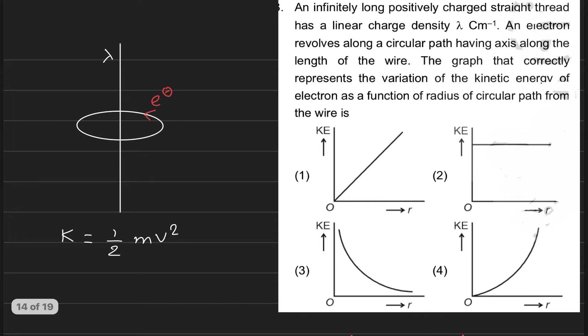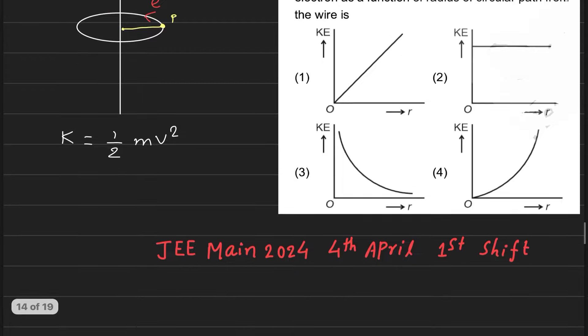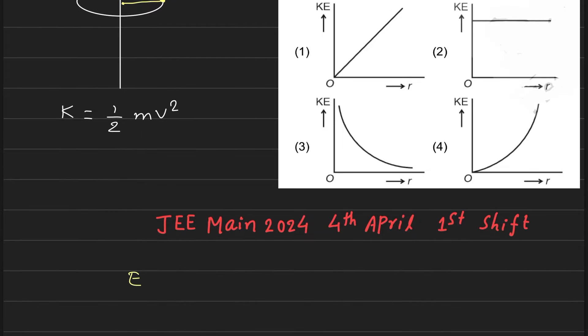So look at this point, this is radius. So what will be the electric field at this point? The electric field will be the straight wire which is of infinite length, 2k lambda by r.